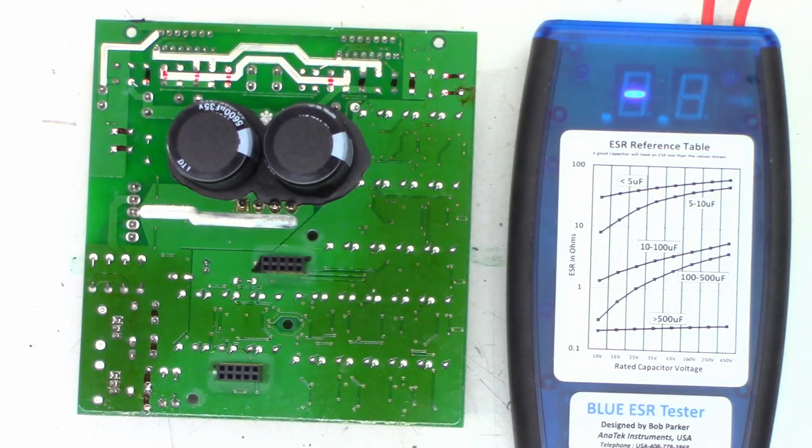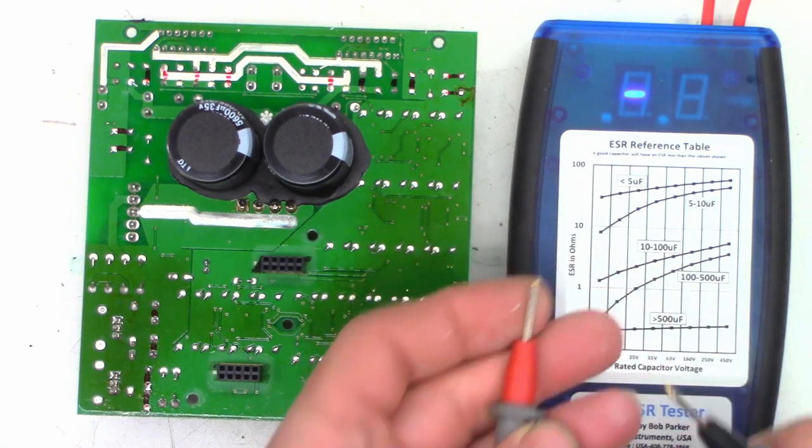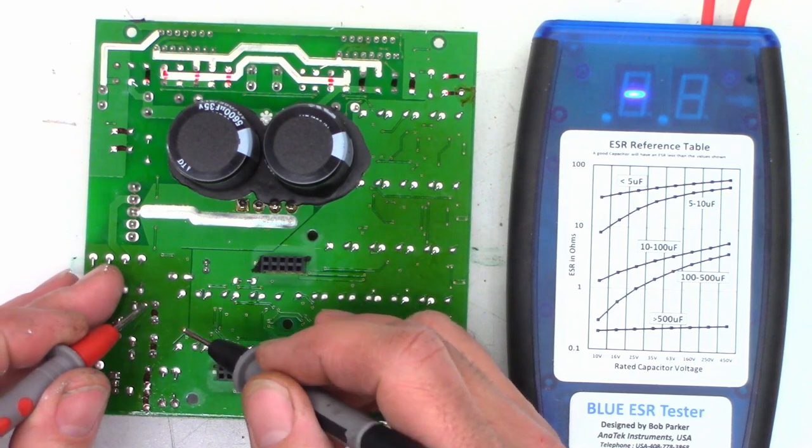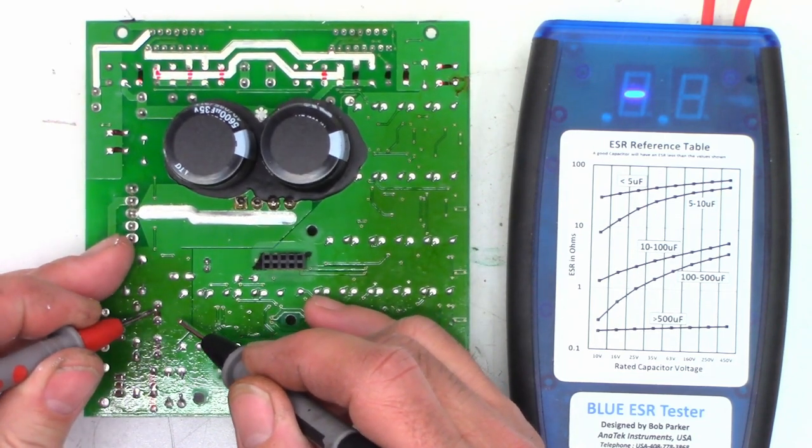Okay, let's ESR some caps on this board right now. First I'm going to verify that we have 0.0 when I short the leads together and we do. We'll start with the 470 microfarad input filter caps for the regulators and I see 0.95 ohms on that one, a little bit high for me.